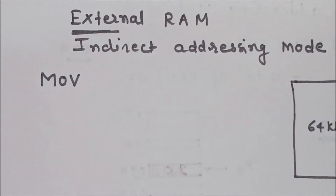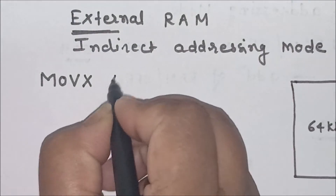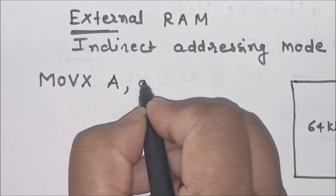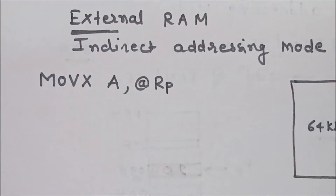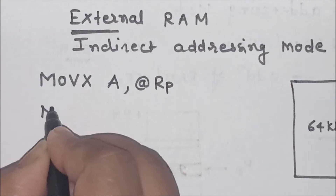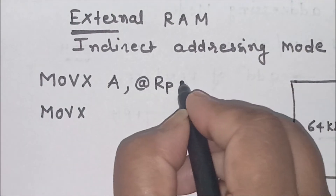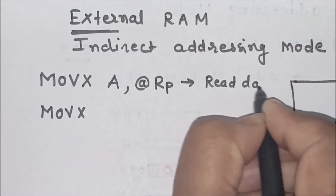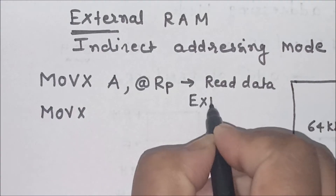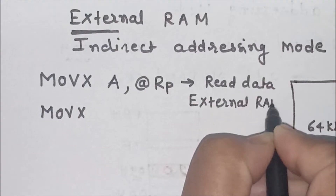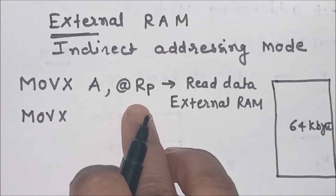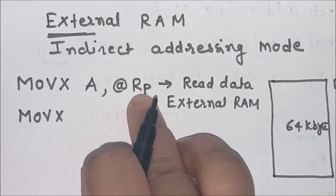Only one instruction can be used for external RAM, that is MOVX. X indicates external RAM memory. Only two types of instructions can be used: accumulator can be used as a destination and RP — meaning R0 or R1 — can be used as a pointer register to external RAM. So the destination is the accumulator, meaning this instruction is used to read data from external RAM.